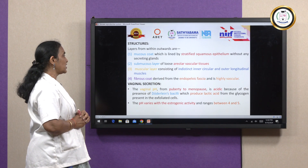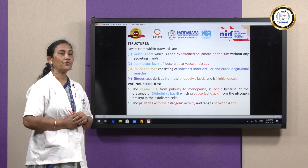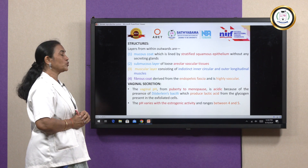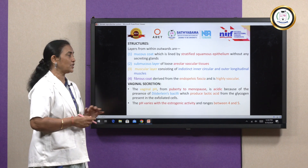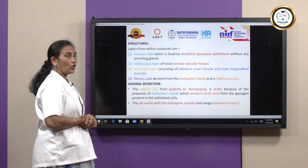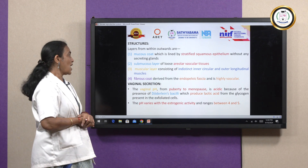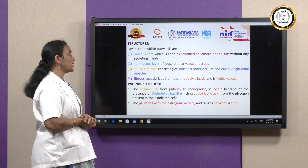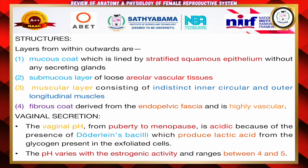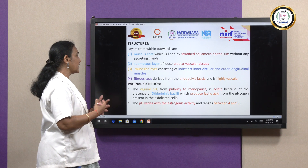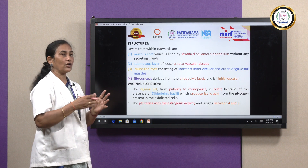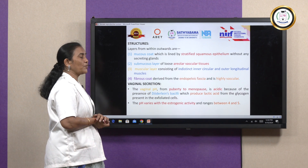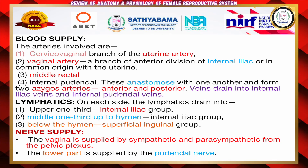Regarding vaginal secretions: the vaginal pH is acidic from puberty to menopause — from when the girl has not attained menarche to when menstruation ceases — because of the presence of Doderlein bacilli. These Doderlein bacilli produce lactic acid by acting on the glycogen present in the exfoliated cells. The pH varies with estrogenic activity and ranges between 4 to 5.